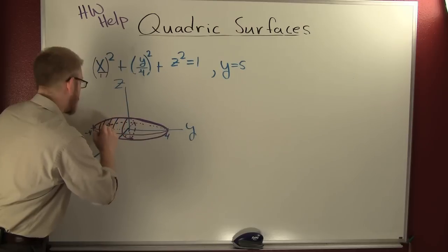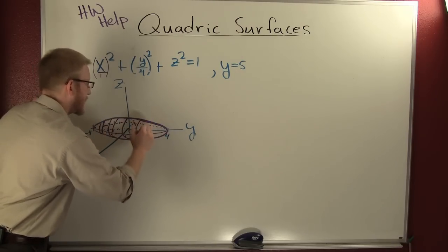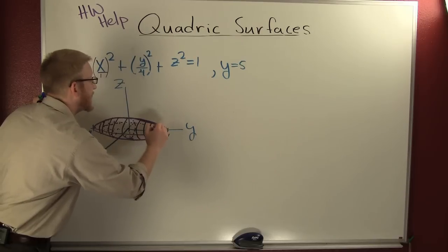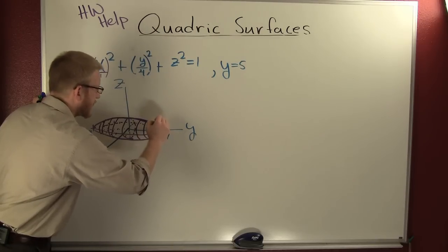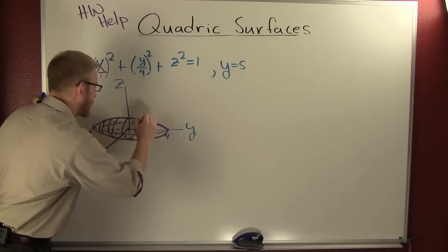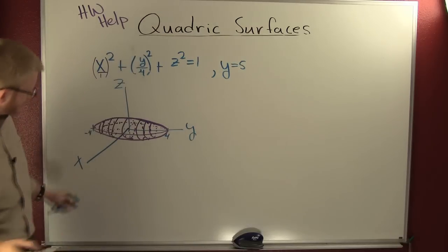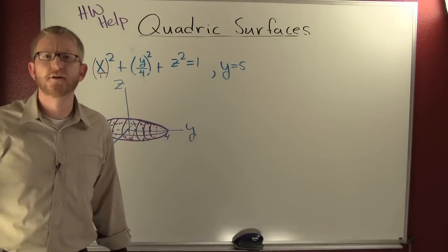It was looking real good until I put these other traces in there. So this is an ellipse, an ellipsoid. The suffix oid means like an ellipse. Can you see it all 3D and stuff? Awesome.